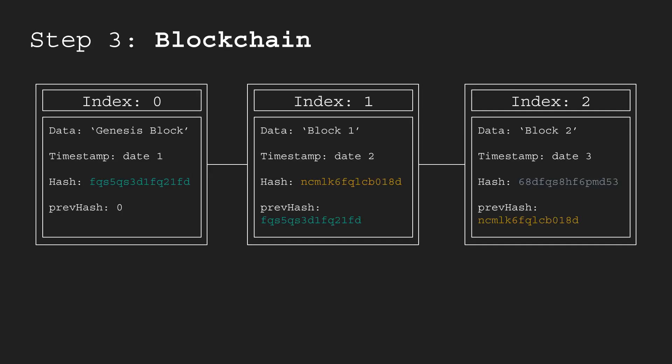In the previous video we ended with solving the problem of maintaining order and integrity in the chain, and we did this by adding the previous hash field to each block. Whenever one hash is changed — maybe because someone changed the content of one block — all the hashes that follow that block will be changed as well, which invalidates the chain. This builds in pretty good security.